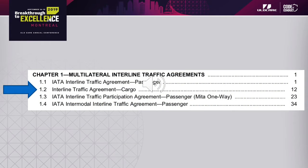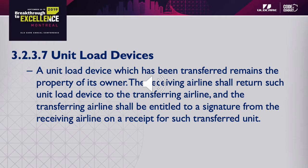As we get into the META, Chapter 1, we find that Section 1.2 is the Interline Traffic Agreement cargo, narrowing it down into the cargo and ultimately the ULD function. Within this section, we find 3.2.3.7 Unit Load Devices, where it says very clearly: a unit load device which has been transferred remains the property of its owner. The receiving airline shall return such unit load device to the transferring airline, and the transferring airline should be entitled to a signature from the receiving airline on a receipt for such transferred unit.